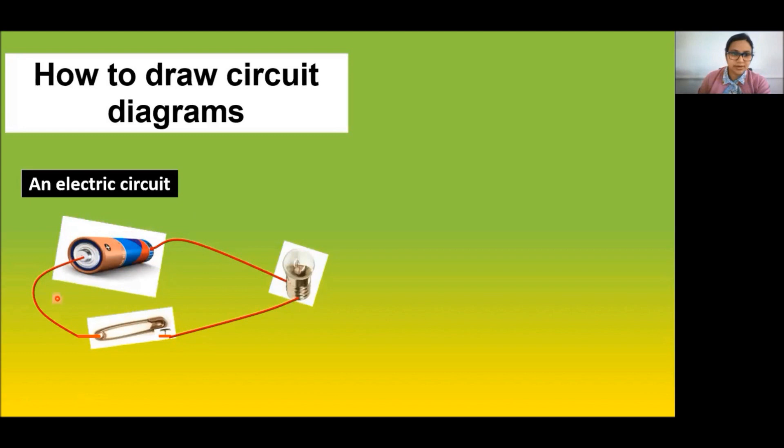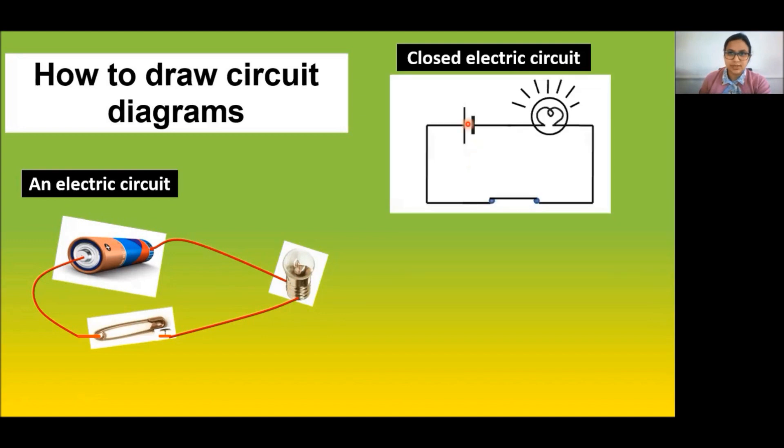A sample diagram is given here. This is an electric cell connected to a pin. The pin acts as a switch and is connected to the light bulb. The light bulb is connected back to the negative terminal of the battery. So let us draw this. The cell is connected to the pin, which is connected to the light bulb. The light bulb is connected to the negative side of the battery. This is a closed circuit.